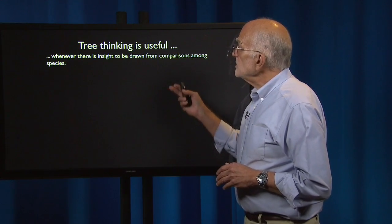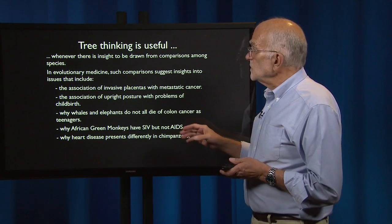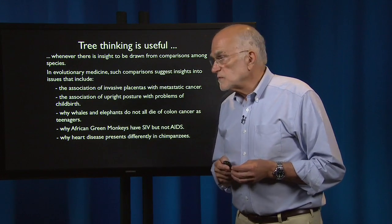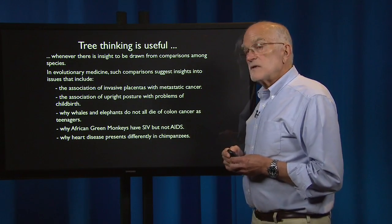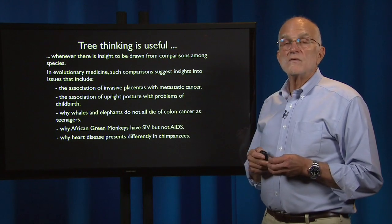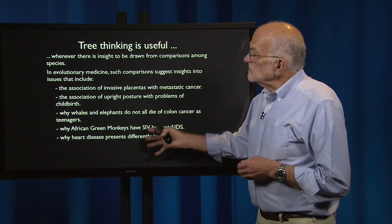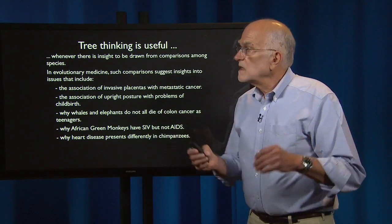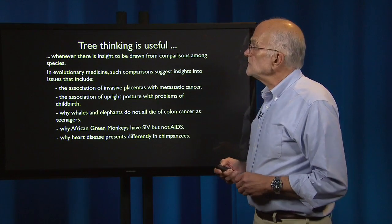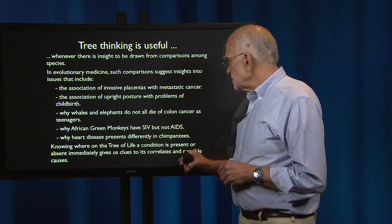Tree thinking emphasizes explanations within the context of phylogenetic trees, where differences arise by deviation from the last common ancestor. It is useful whenever there is insight to be drawn from comparisons among species. In evolutionary medicine, such comparisons suggest insights including the association of invasive placentas with metastatic cancer, the association of upright posture with problems of childbirth, why whales and elephants don't all die of colon cancer as teenagers (Peto's paradox), why African green monkeys have SIV but don't progress to AIDS, and why heart disease presents differently in chimpanzees.